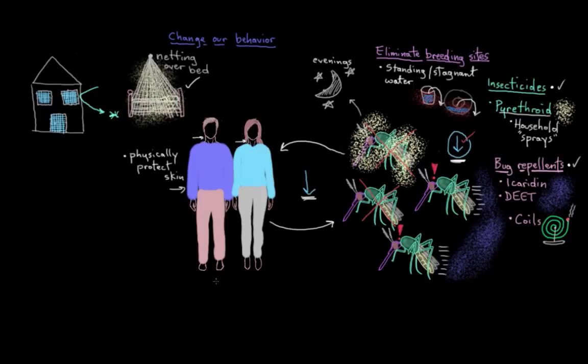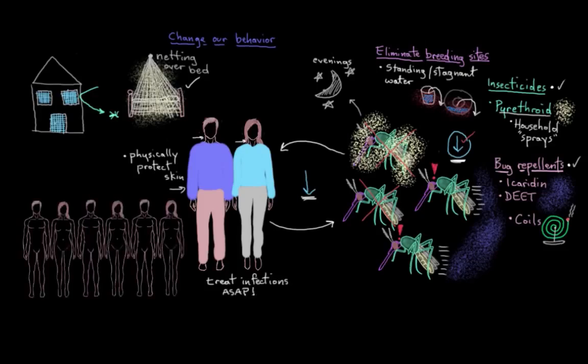The other thing we can do to prevent transmission is to treat people with anti-malarial drugs as soon as we know that they're infected. If an infected mosquito bites this guy and infects him, having more infected people around means that uninfected mosquitoes that might come along can easily draw plasmodium from this infected person and go on and infect another person with it. So it's important to get treatment right away.